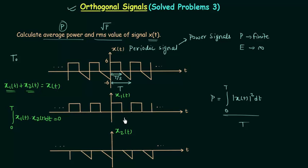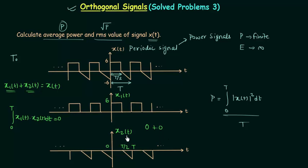Let's verify whether x1(t) and x2(t) satisfy this orthogonality condition. From 0 to T/2, x2(t) is equal to 0 and x1(t) is equal to 6, so their product is 0. From T/2 to T, x2(t) is not zero but x1(t) is equal to 0, so again the product is 0. Therefore, the integral of x1(t)·x2(t) from 0 to T equals 0.